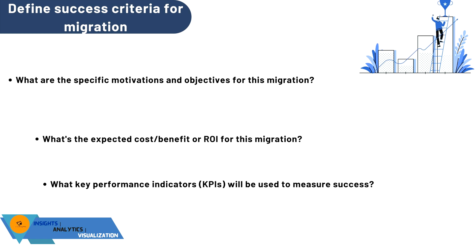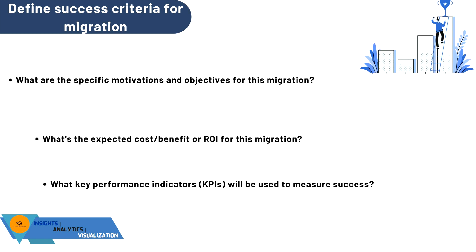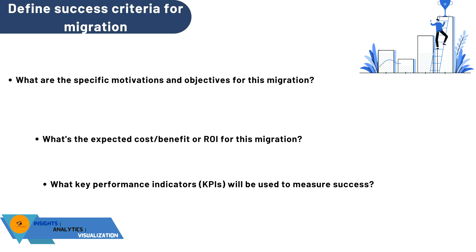Define the KPIs used to measure migration success. These can include: the number of reports rendered from the legacy BI platform decreasing month over month; reports rendered from Power BI increasing month over month; number of Power BI report consumers increasing quarter over quarter; percentage of reports migrated to production by target; and cost reduction in licensing cost year over year.